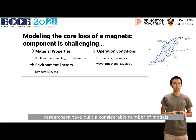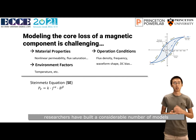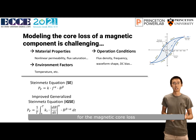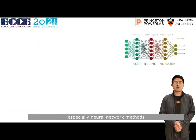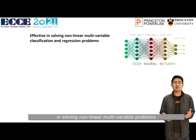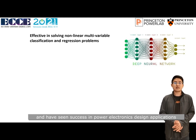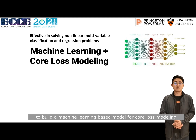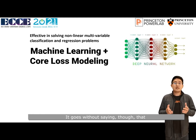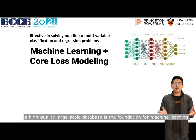In the past decade, researchers have built a considerable number of models for magnetic core loss, each with their own set of limitations. In recent years, machine learning techniques, especially neural network methods, have proven to be extremely effective in solving nonlinear multivariable problems, and have seen success in power electronics design applications. These inspired us to explore potential opportunities to build a machine learning-based model for core loss modeling. A high-quality, large-scale database is the foundation for machine learning.